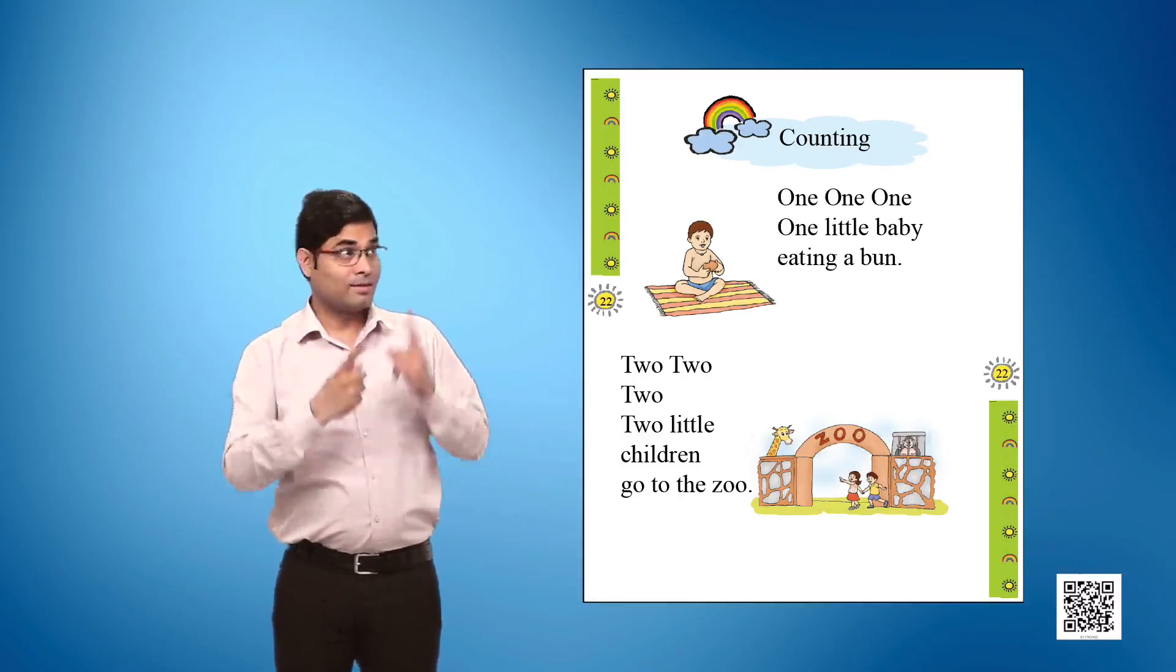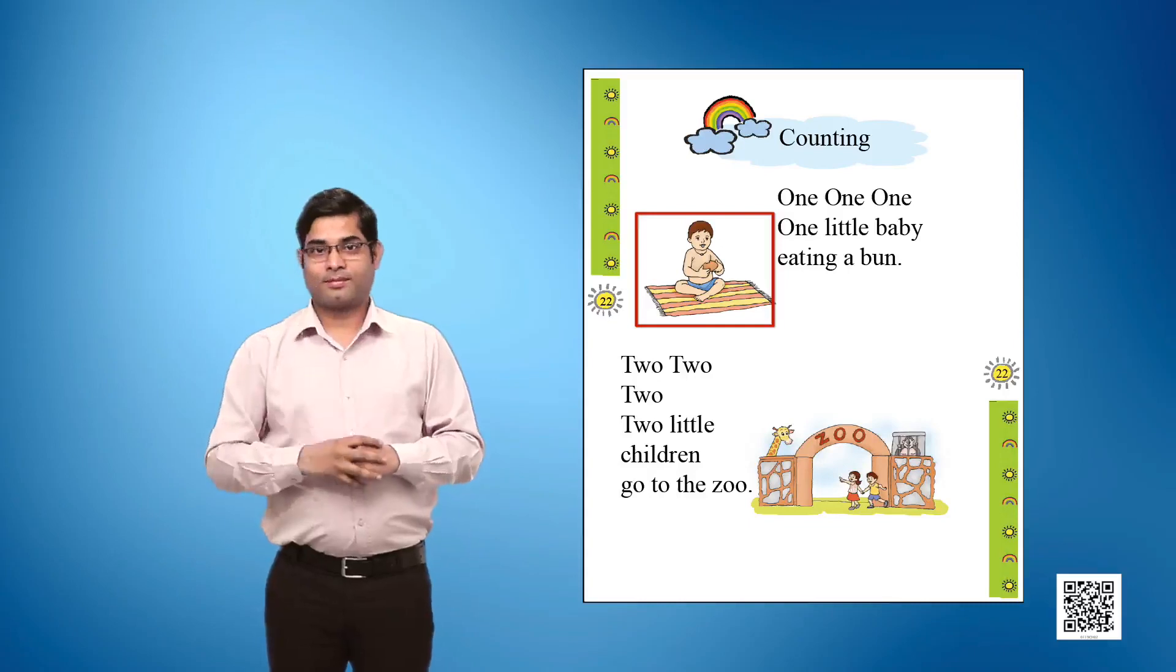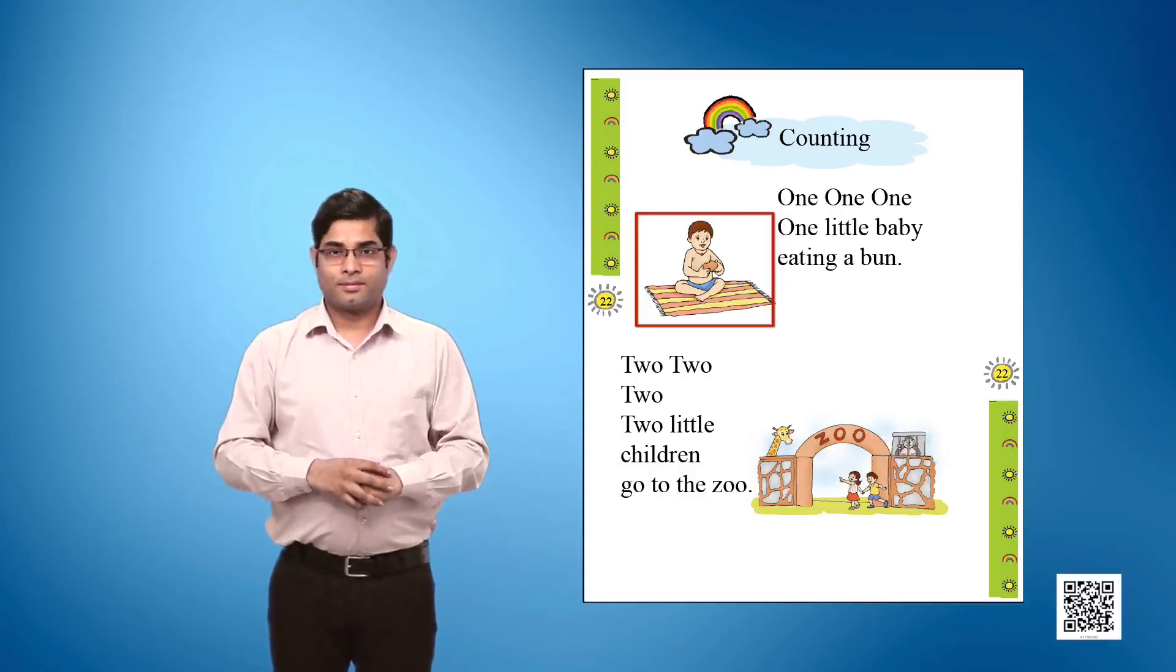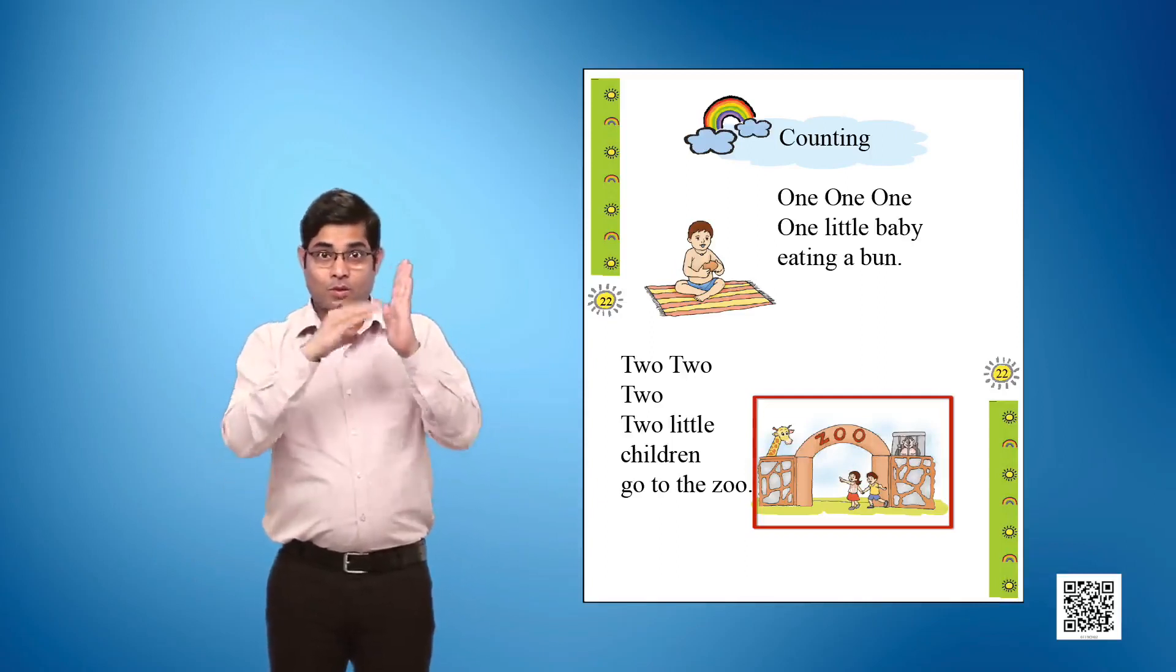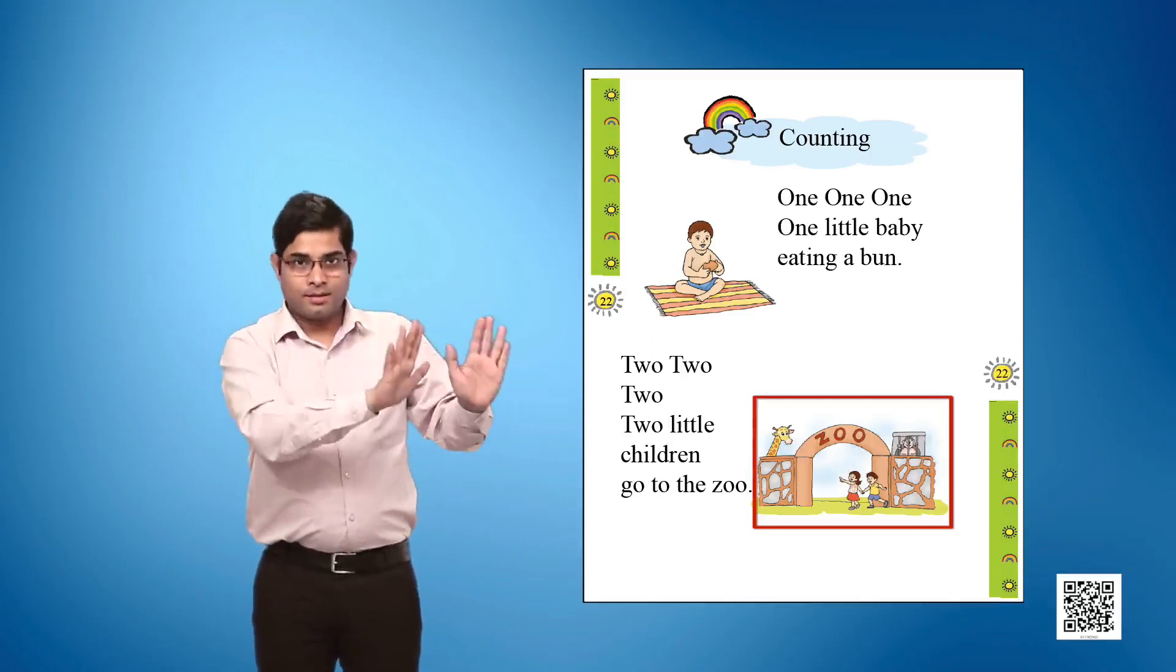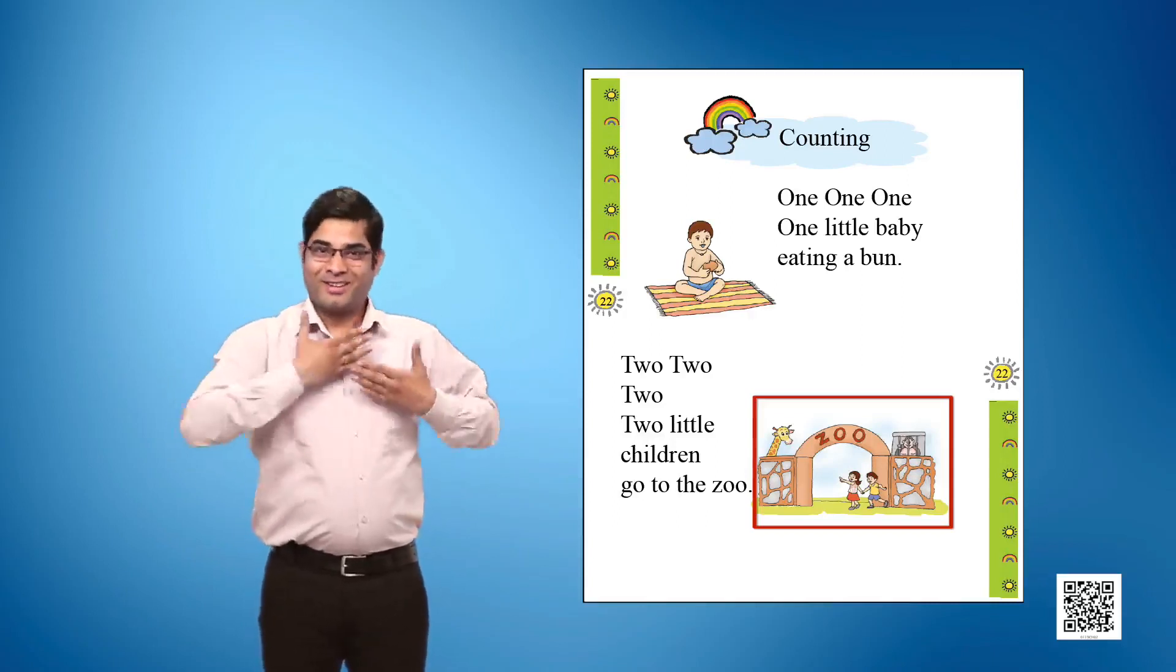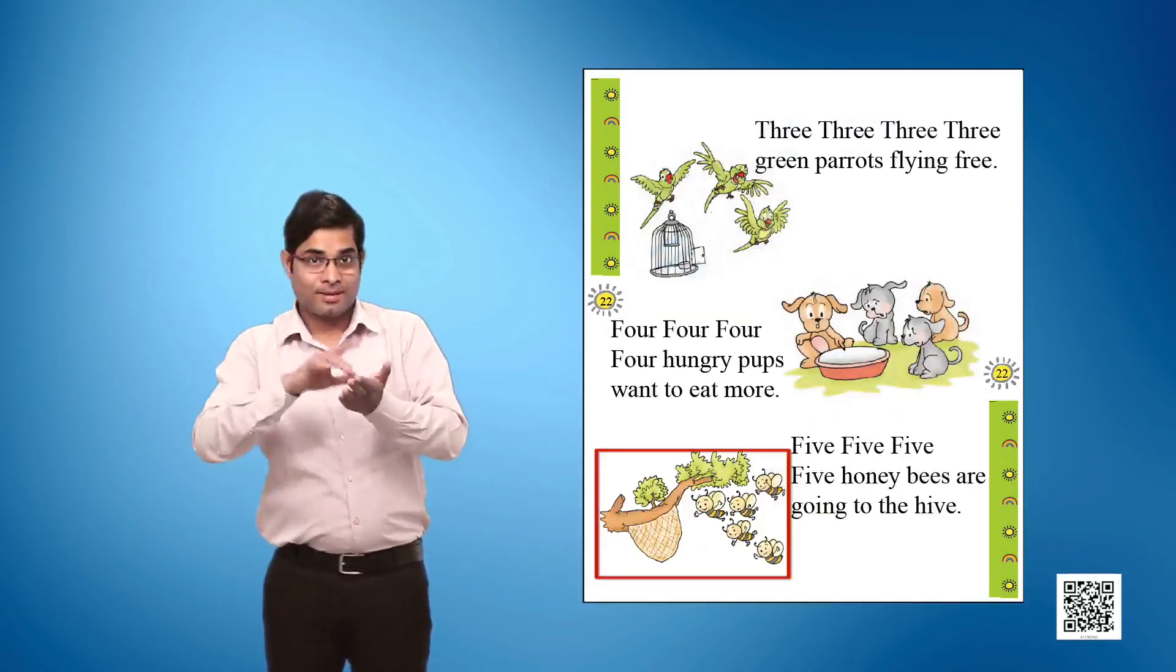Object 1: Bun is a small, bread-like eatable. Place 1: Zoo is a place where animals are housed in different enclosures and are visible to people from a safe distance. Place 2: Hive is a place where honeybees live.